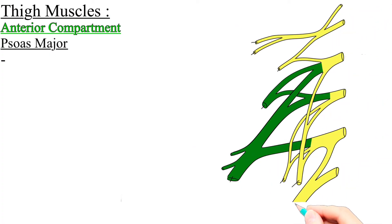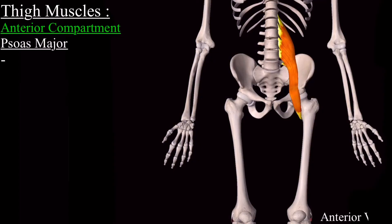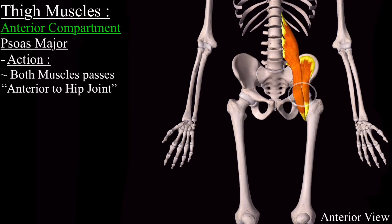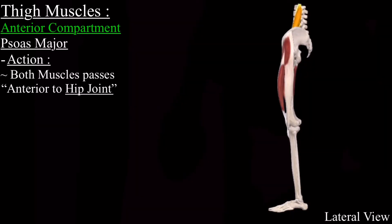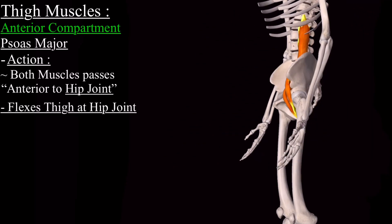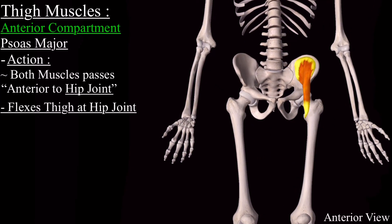The psoas major muscle is innervated by branches from the anterior rami of L1, L2, and L3. Regarding the action: both the psoas major muscle and the iliacus muscle pass over the hip joint, so they act on the hip joint and not on the knee joint. The main action of the psoas major muscle is that it flexes the thigh at the hip joint. Since the psoas major muscle passes anterior to the hip joint, contraction of this muscle will pull the femur in the direction of flexion.